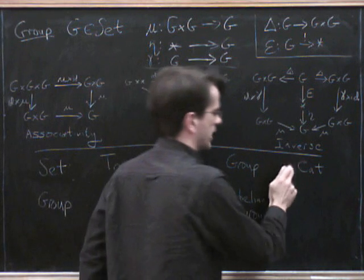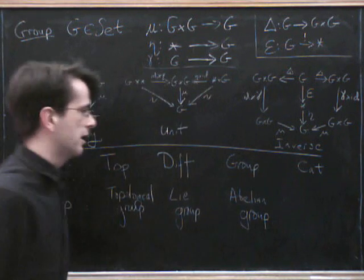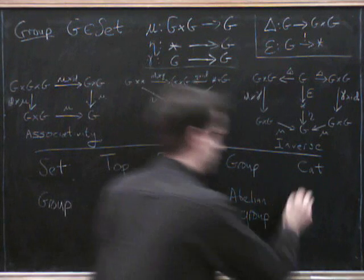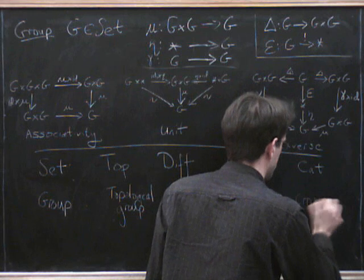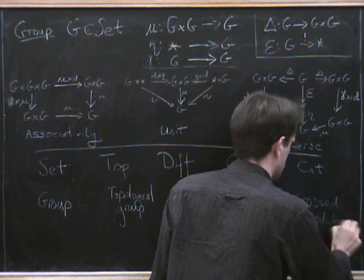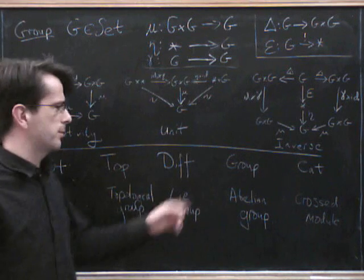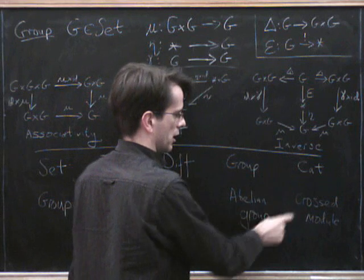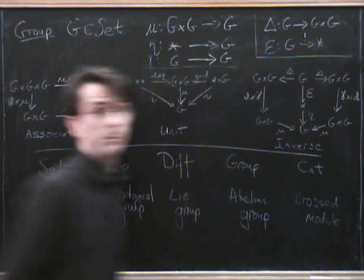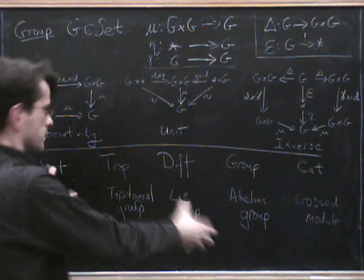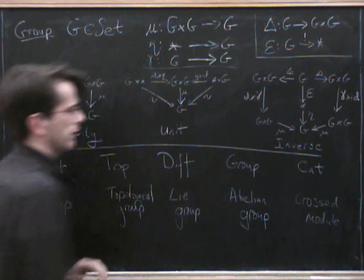So category of categories, a group object in there, is something which arises in various contexts. I guess I'll just call it a cross-module. It's also a category in a category of groups, but that's not of much interest to us at the moment. It's just a different example of a group object in a Cartesian category. So these are nice Cartesian categories.